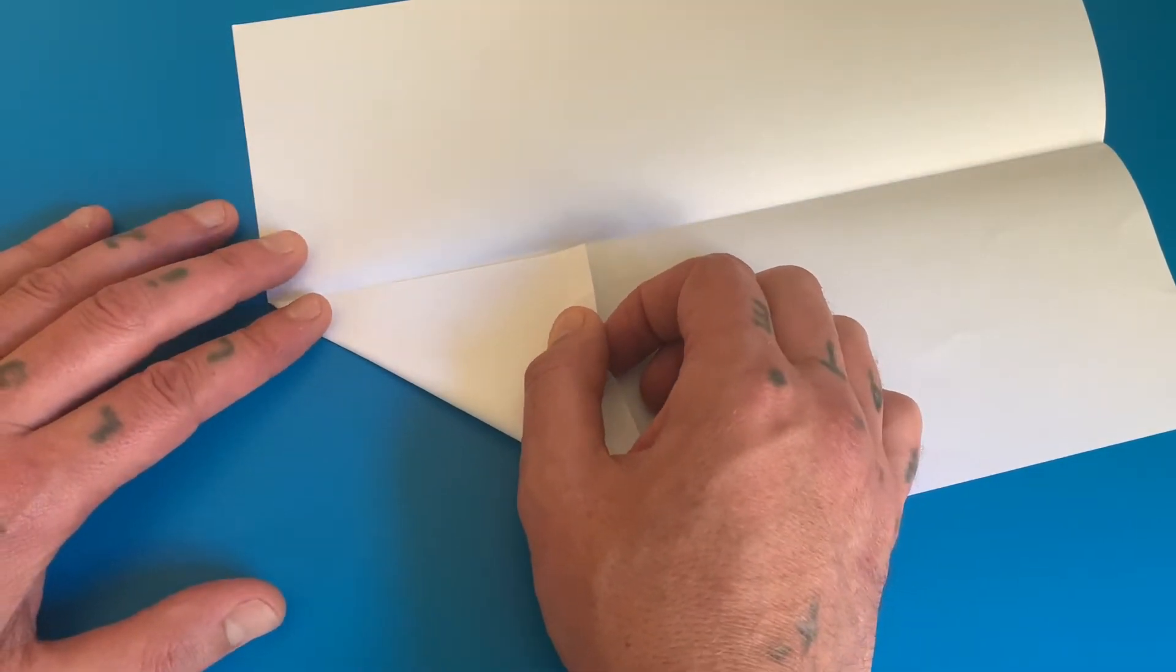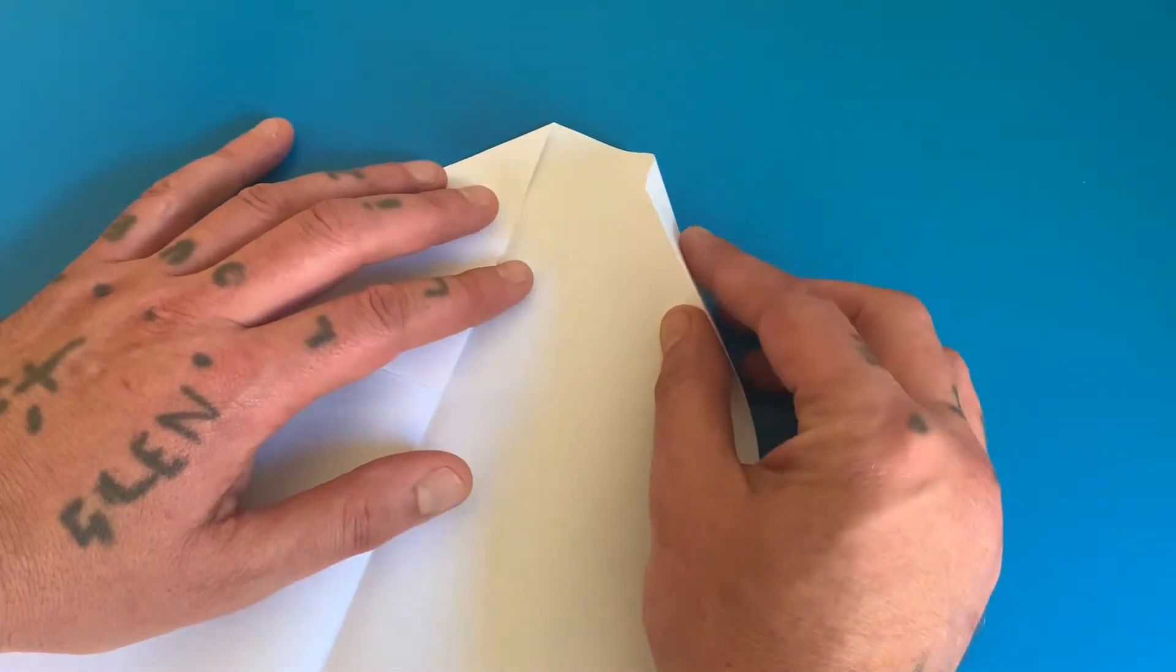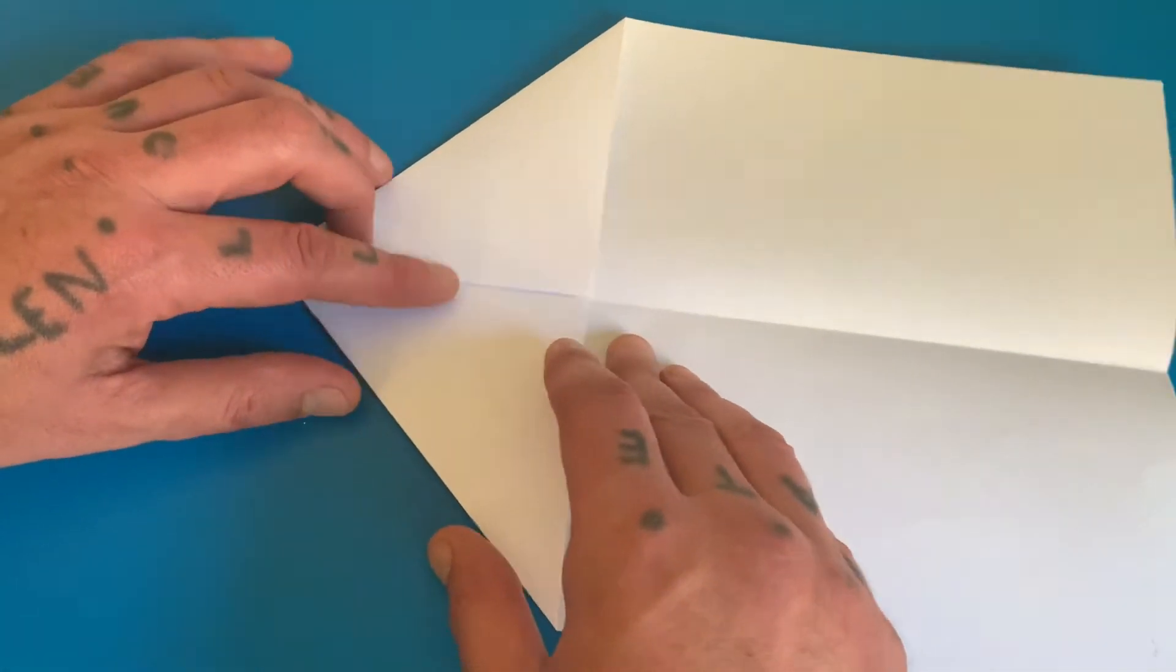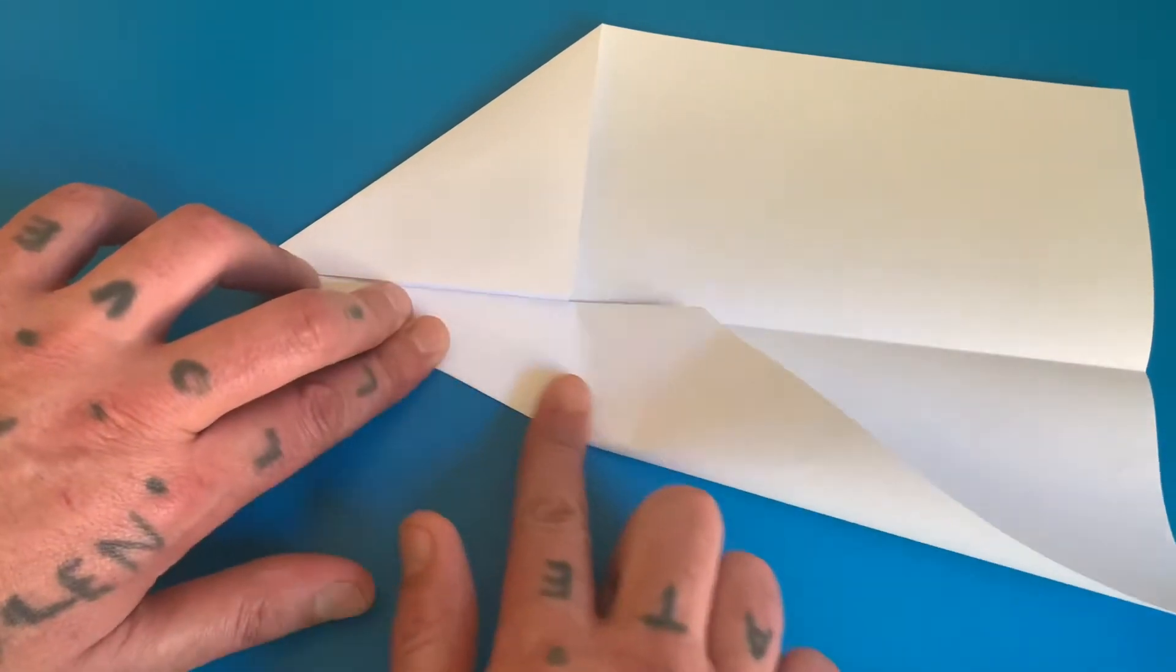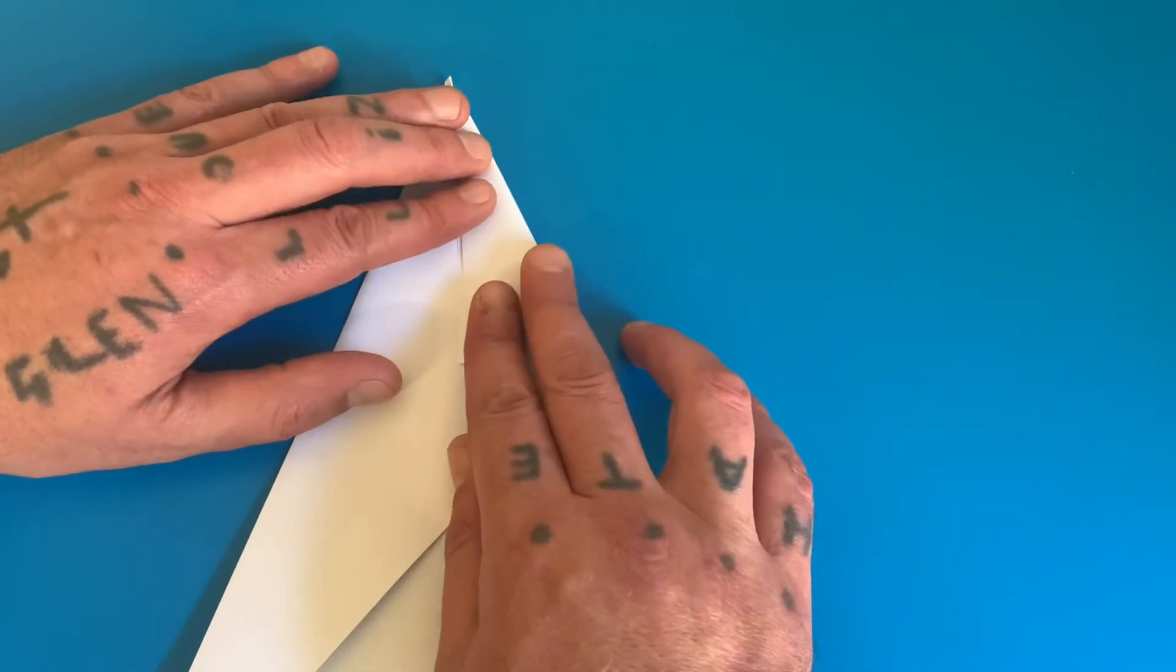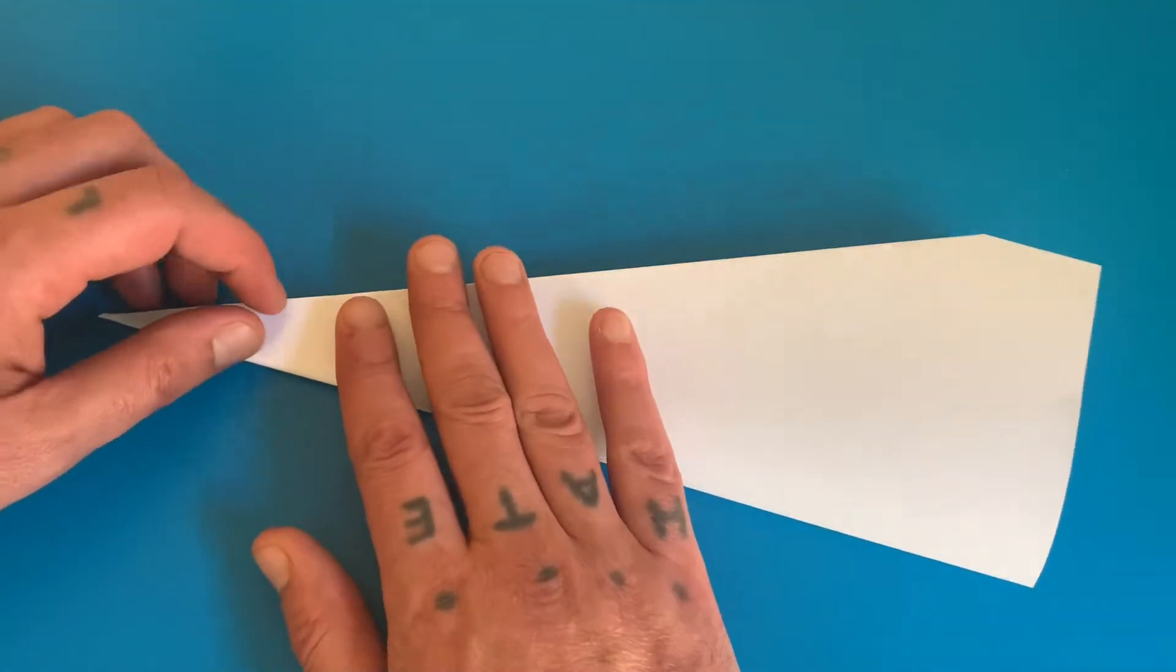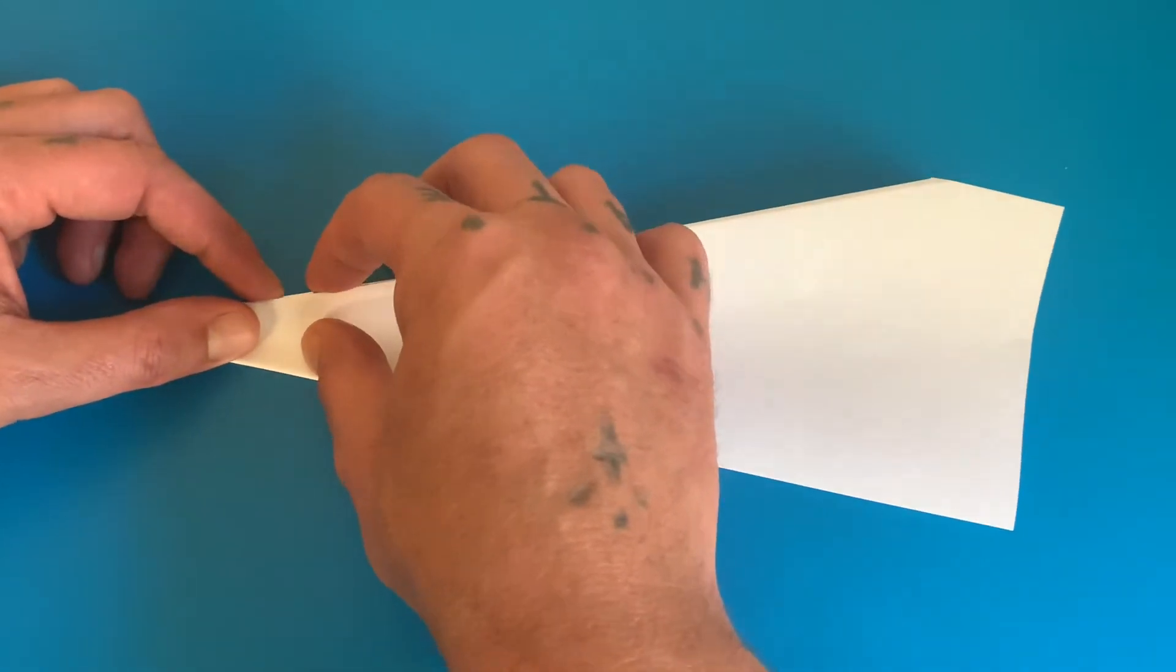this crease, this corner here, and then take this corner again, fold it along the line, and then probably about a centimeter, maybe a centimeter and a half.